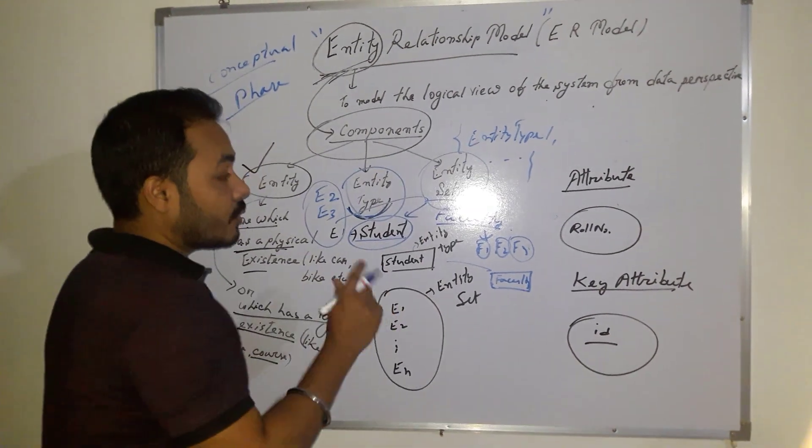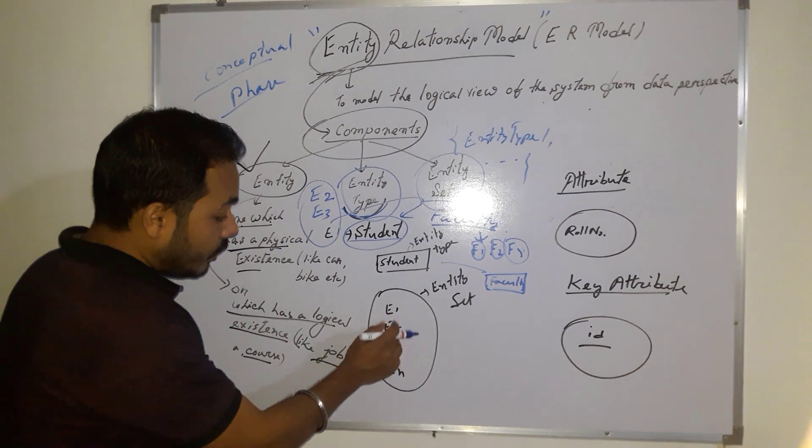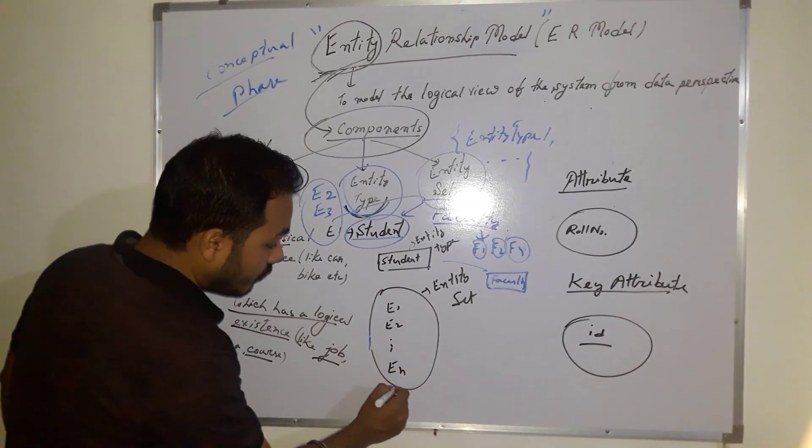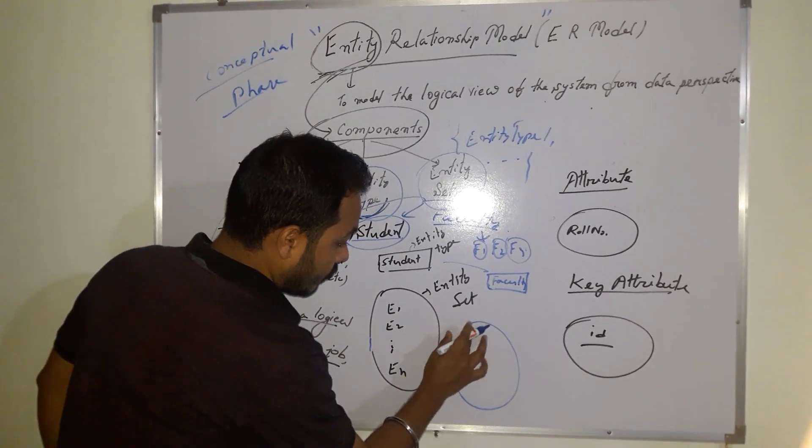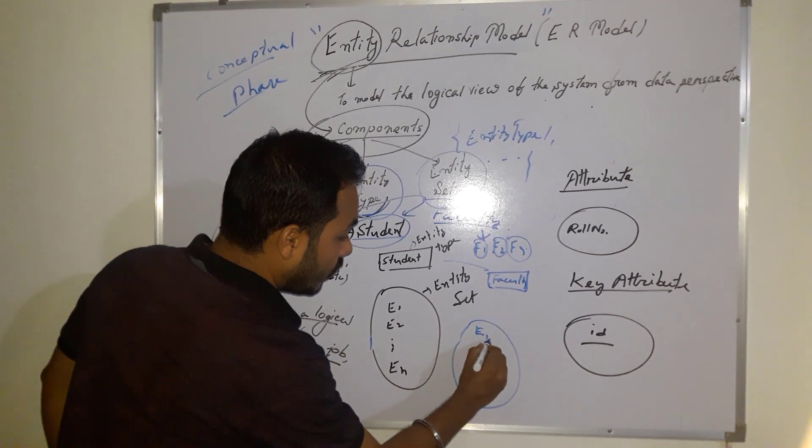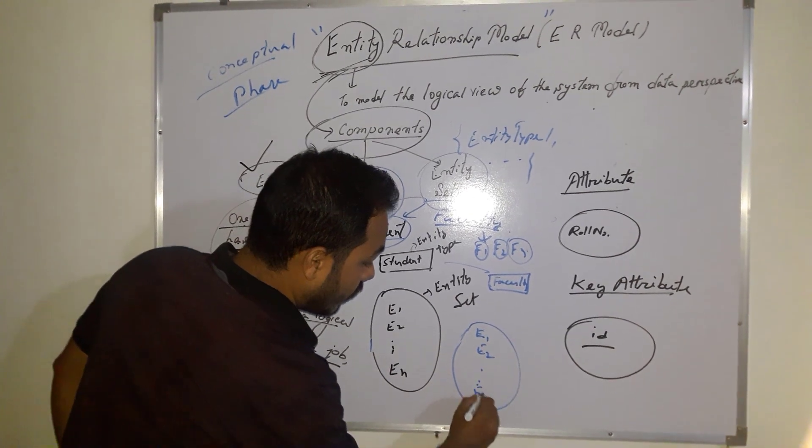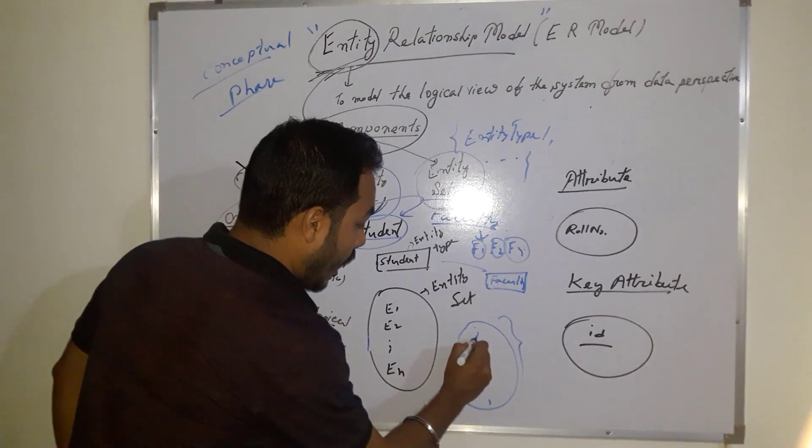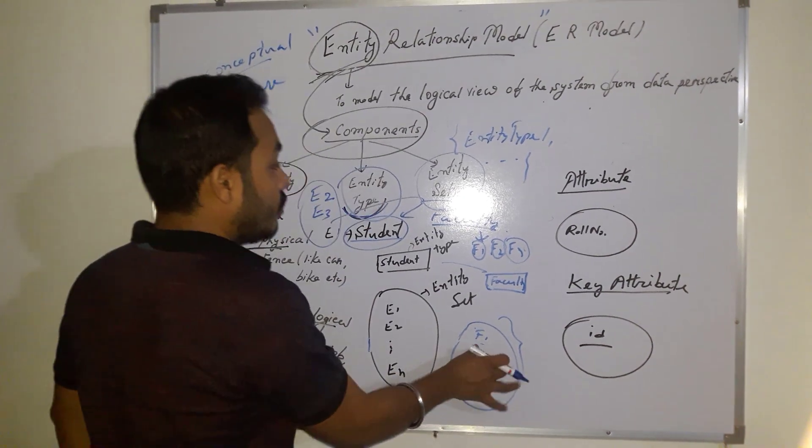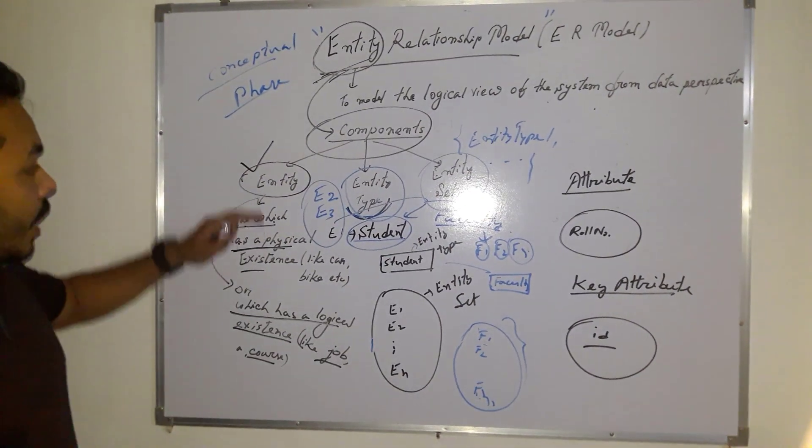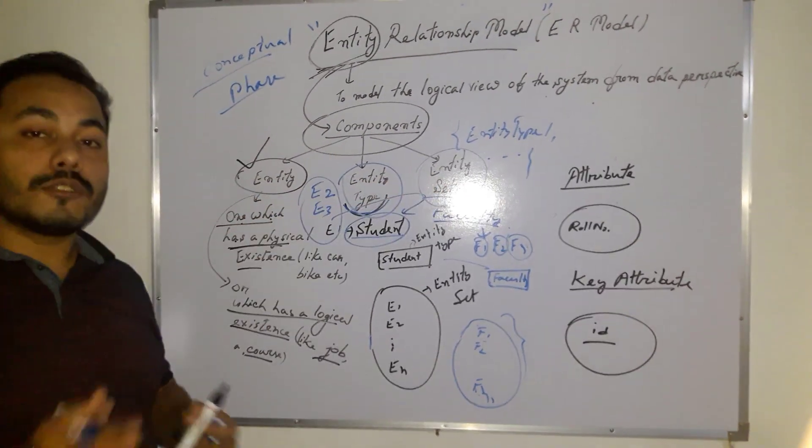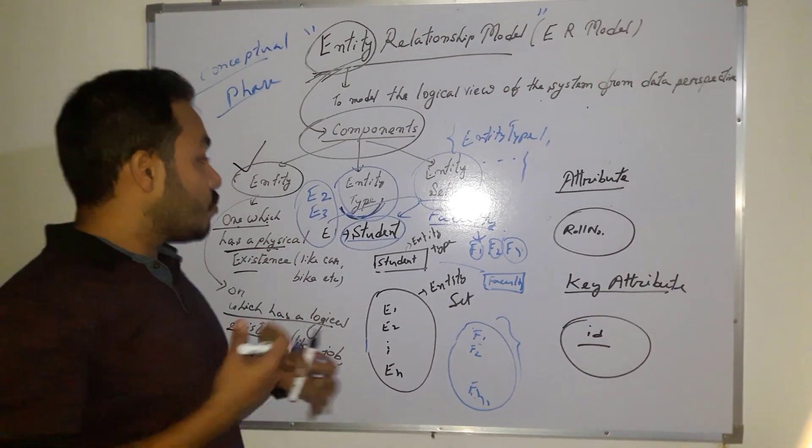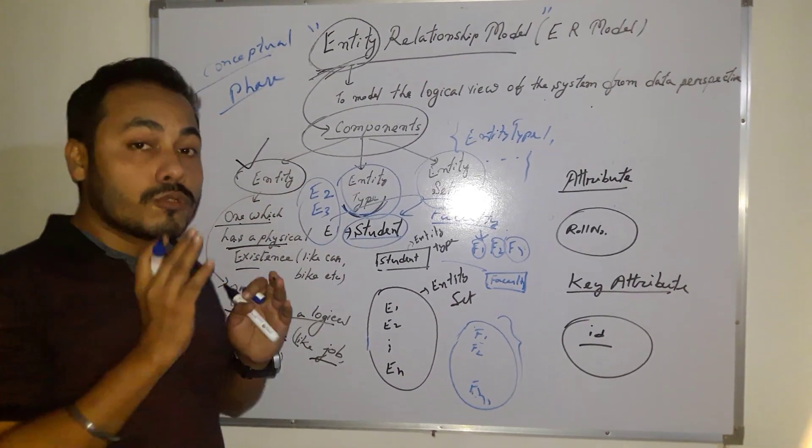Now, as I have said, entity set is consisting of more than one entity. So say e1, e2, e3, en. We will draw a symbol like this one. This will indicate the entity set. Suppose for faculty, one f1, f2 - this will denote the entity set. So guys, I think entity, entity type, and entity set are clear to you, along with their symbols - this rectangular symbol and this symbol, because these are sometimes confusing to you. So many students forget the difference, but you should know the difference between them.